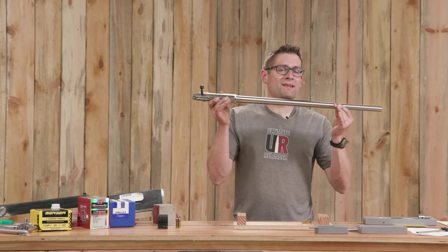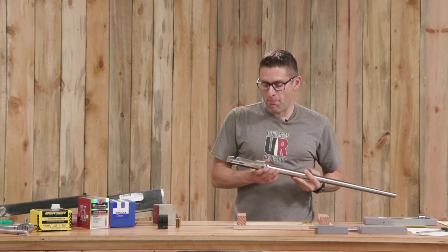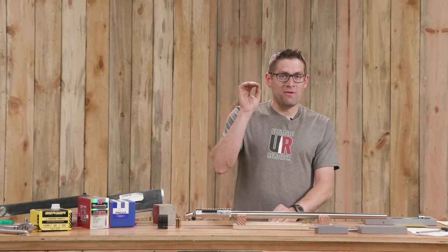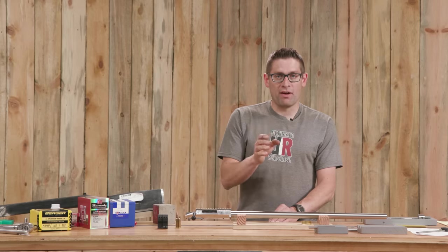Well, there it is. The 6.5x47 bench rest barreled action with this Bat Model B action. I'll have to say I'm not feeling overly patient when it comes to firing this rifle. But it's going to take a little while. This concludes part one.